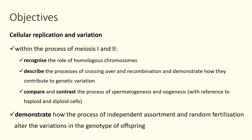Starting off with recognizing the role of homologous chromosomes — what are they and what do they do? Then we want to look at the processes of crossing over, recombination, and how they contribute to creating genetic variation. We want to look at how sperm and ova are produced, and also independent assortment and random fertilization. To put it simply, we're looking at how meiosis contributes to and results in genetic variation in offspring through sexual reproduction.